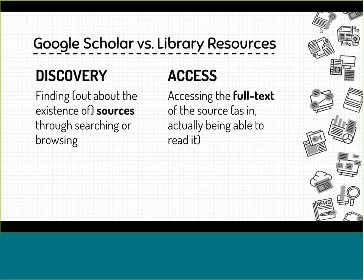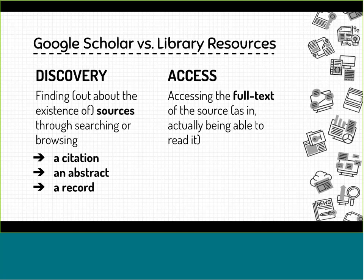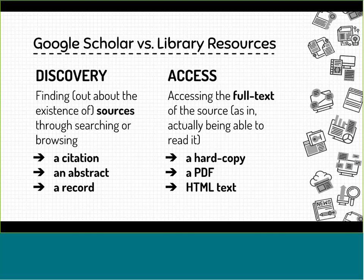So there are really two overall concepts I want you to keep in mind when we're talking about doing research. That is discovery, which is finding out about the existence of sources through searching or browsing. And access, which is actually getting the full text of the source — they're kind of two separate issues. When we're talking about discovery, the item that you are finding is really like a citation, an abstract, a record — evidence that a source exists. And for access, it's actually the hard copy or a PDF or HTML text of the item, the full text.